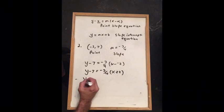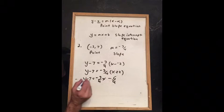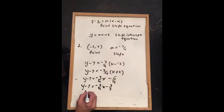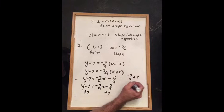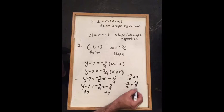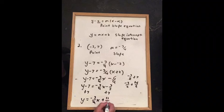Next, we distribute: y minus 7 equals negative 3 over 4 times x, and minus times positive is negative, so 3 times 2 is 6 over 4, which reduces to 3 over 2. So y minus 7 equals minus 3 over 4x minus 3 over 2. Then add 7 to both sides: minus 3 over 2 plus 14 over 2 gives 11 over 2. So y equals negative 3 over 4x plus 11 over 2, and this is your answer.